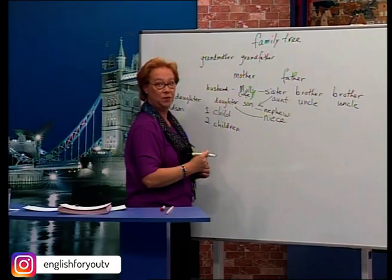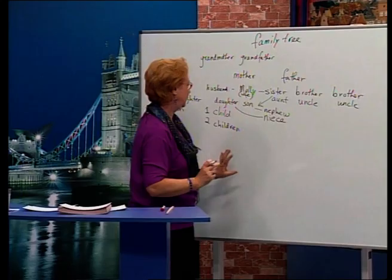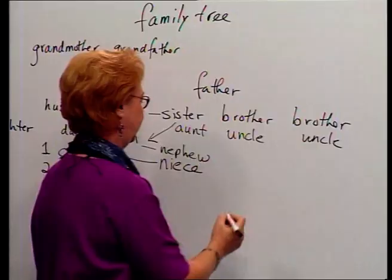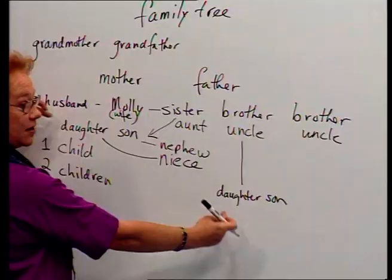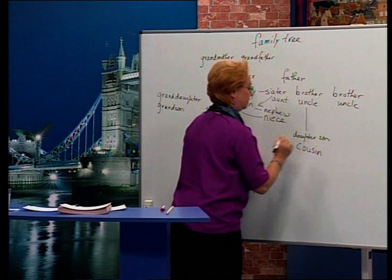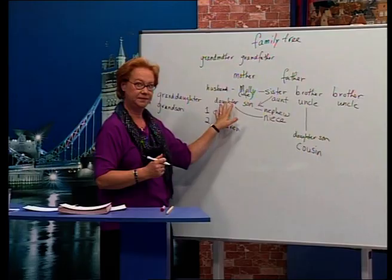It's very complicated, but we've got it. My brother has two children — a daughter and a son. My daughter and sons are cousins. Cousin, cousin.